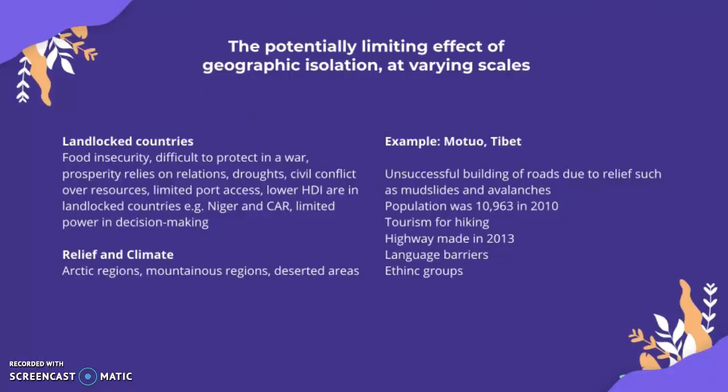Looking at the potentially limiting effects of geographical isolation at varying scales: one type is being landlocked. This can lead to food insecurity, difficulty in protection during war, reliance on relations with other countries, drought, civil conflict over resources, and limited port access. Landlocked countries tend to have lower Human Development Index scores — examples include Niger and the Central African Republic — and there is also limited power in decision-making.